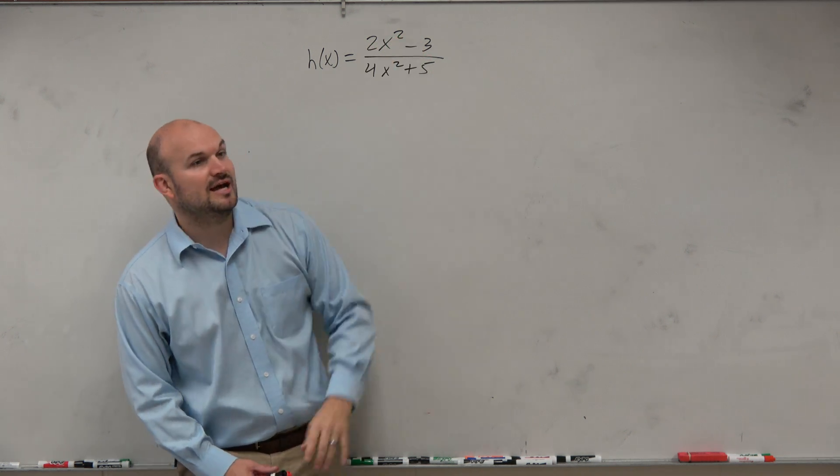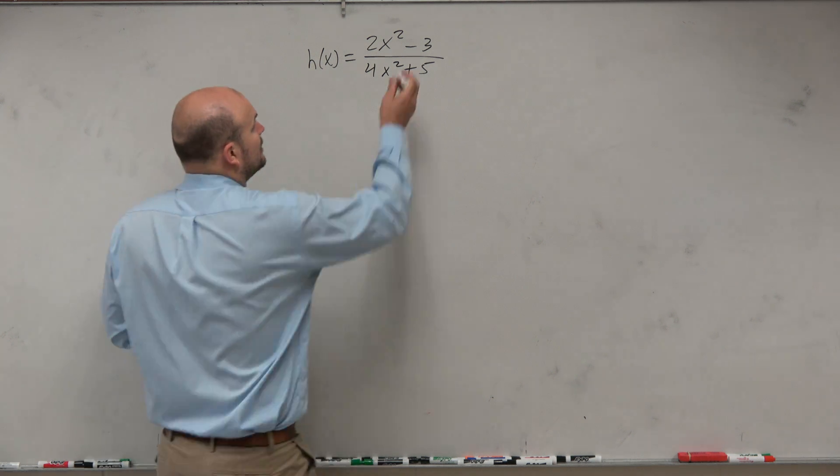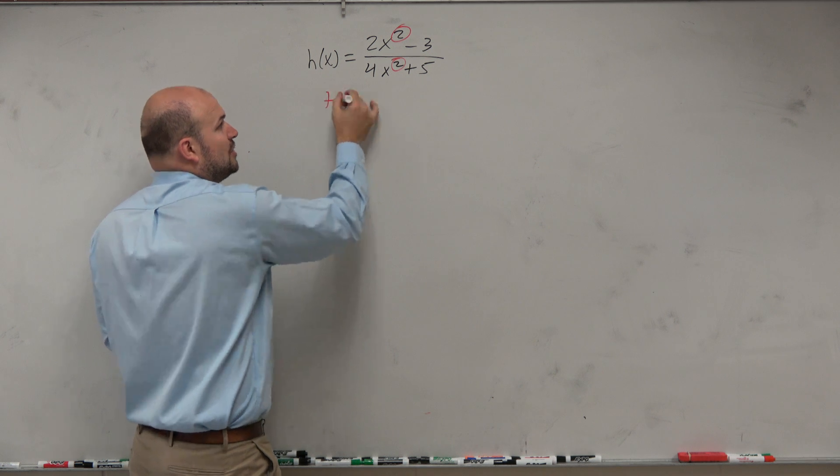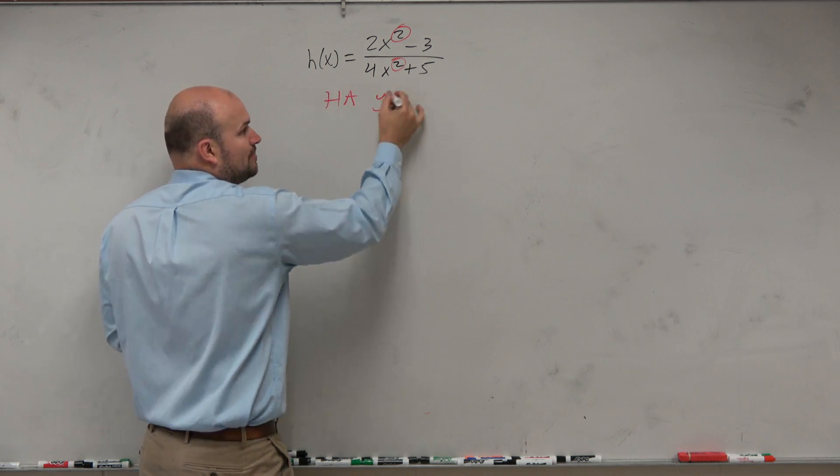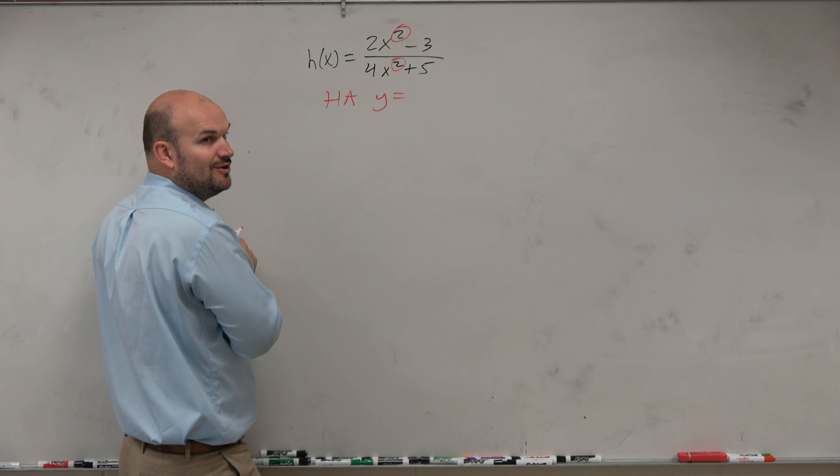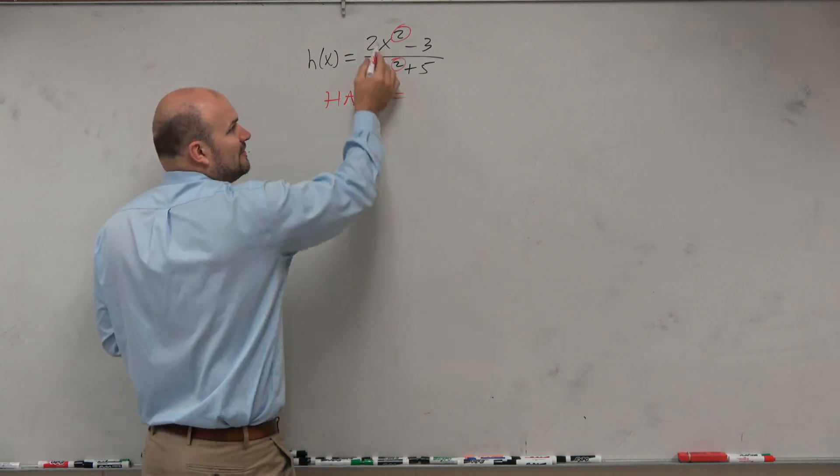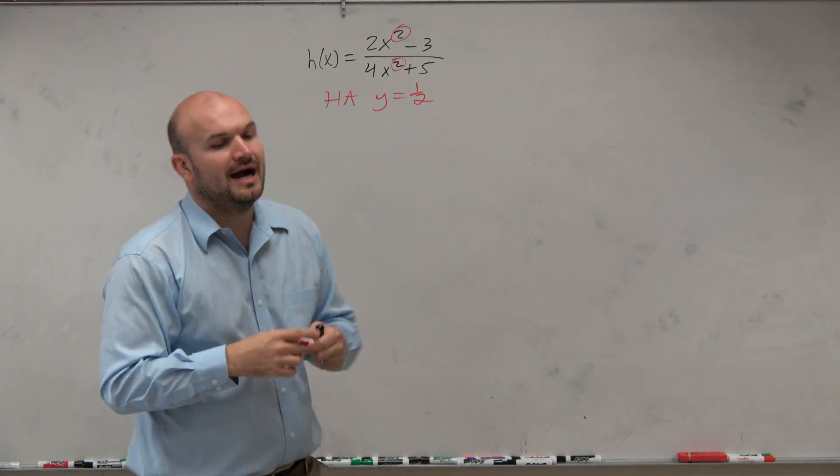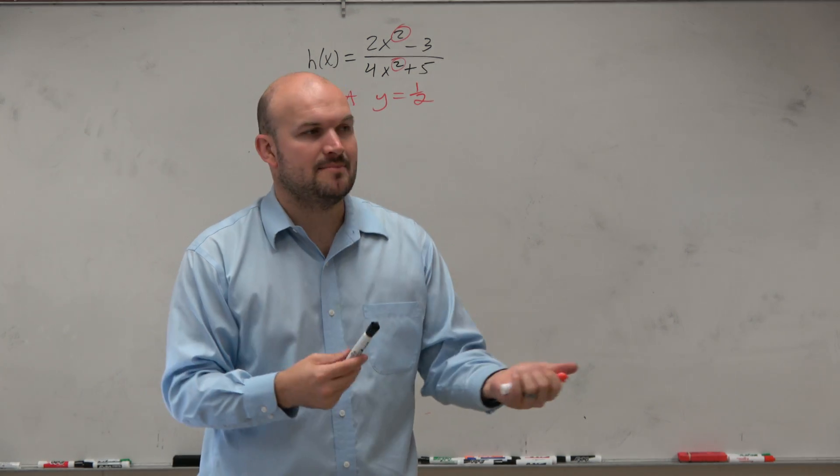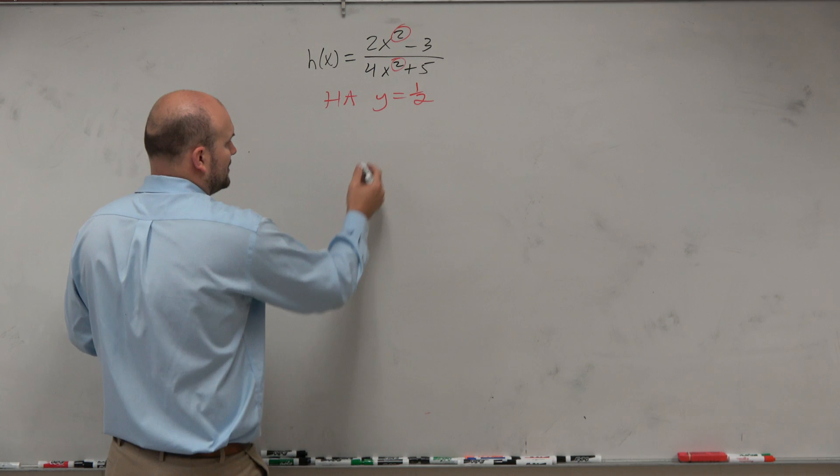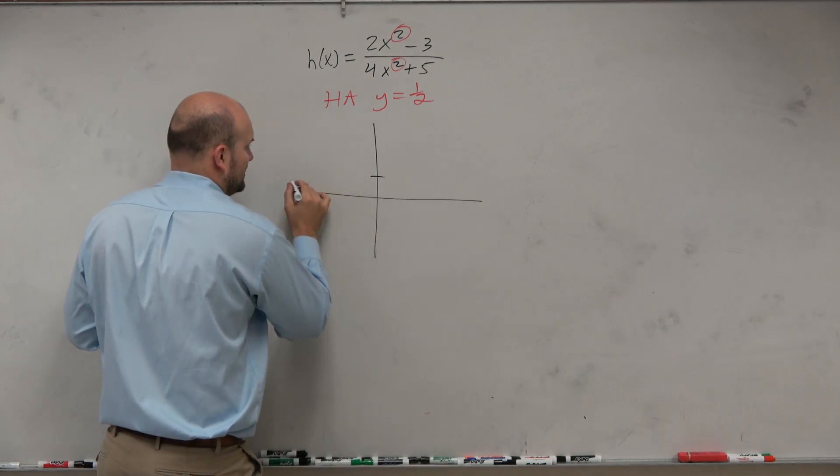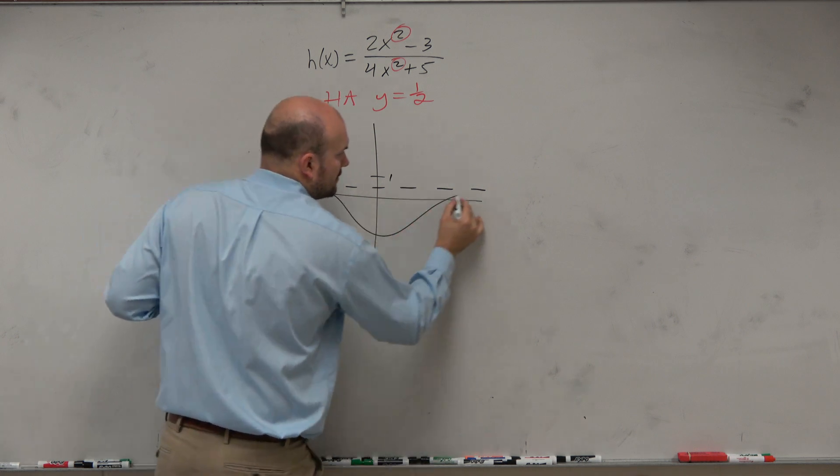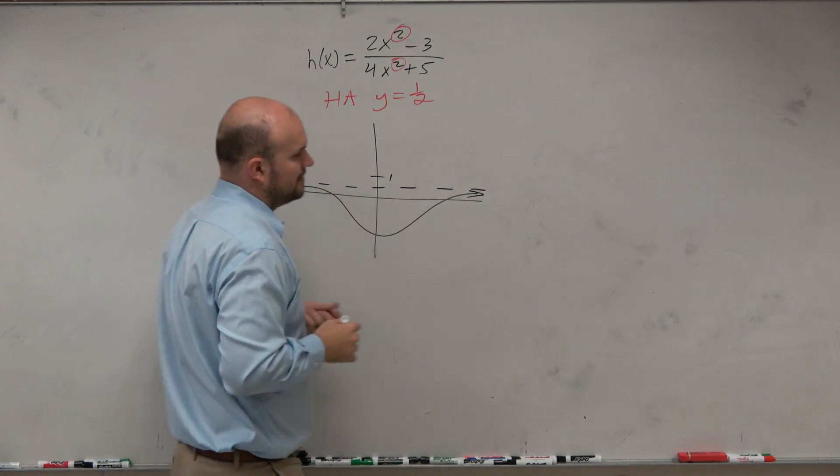The next thing is I look at horizontal asymptotes. I notice that the degree in the numerator is the same as the degree in the denominator. So if you guys remember, your horizontal asymptote is the ratio of the coefficients - two over four is one-half. Now I know what this graph looks like, and I bet when you guys have a graphing calculator you'd really get this as well. The graph is going to look something like this. There's one, here's one-half. It looks something like that.